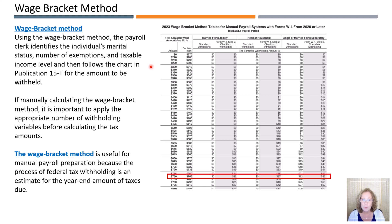Let's say we have an employee who is paid bi-weekly and earned $755 during the payroll period. The employee is single and did not check box 2 on Form W-4. We find the row in the first section that includes $755, and move to the right to the section for single, which is the last section. We choose the standard withholding column because the employee did not check box 2. The tax listed in that cell is $22. Now what would happen if the employee is married filing jointly and everything else is the same? We find the section for married filing jointly, and see that the tax withholding would be zero.